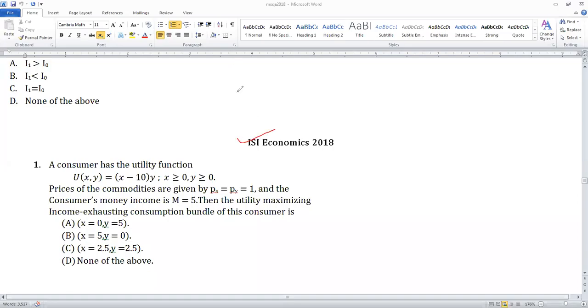This is a 2018 question number 1. The utility is equal to x minus 10 into y. Money income is equal to 5, px is equal to py is equal to 1.